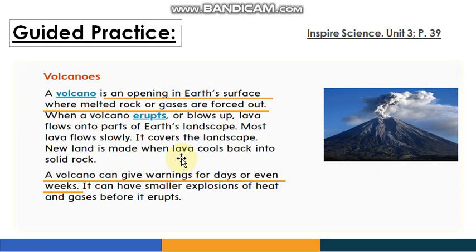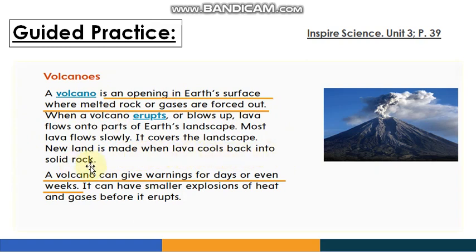Let's read it together: A volcano is an opening in earth's surface where melted rock or gases are forced out. When a volcano erupts or blows up, lava flows into parts of earth's landscape. Most lava flows slowly and covers the landscape. New land is made when lava cools back into solid rock. A volcano can give warnings for days or even weeks — it can have smaller explosions of heat and gases before it erupts.